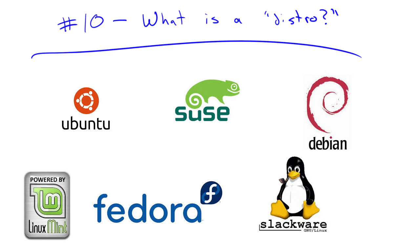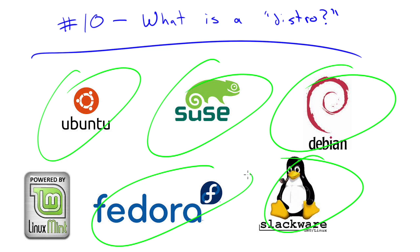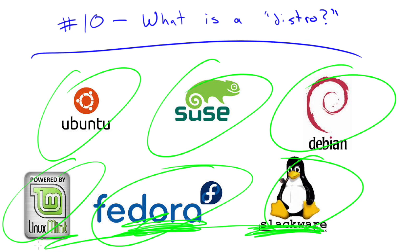Number 10: what is a distro or a distribution? You've probably heard of Linux, and you've also probably heard of all these other names — Debian, Slackware, Fedora, Linux Mint. What do those mean? Well, basically it's like having a car, an automobile, but then having a Chevy, a Ford, a Toyota — all those different brands. That's kind of what these different distros are.